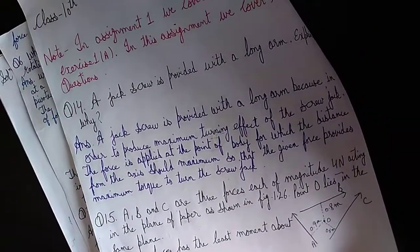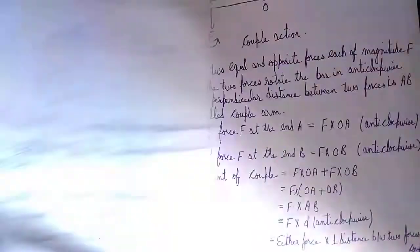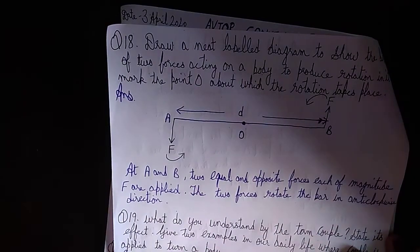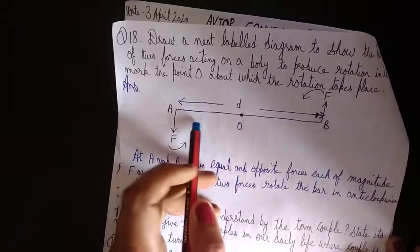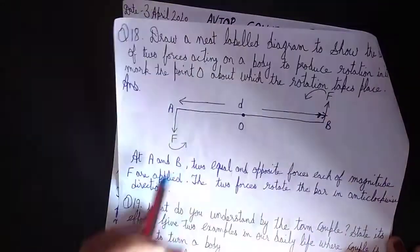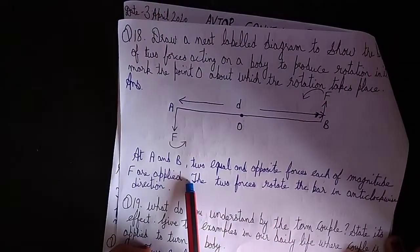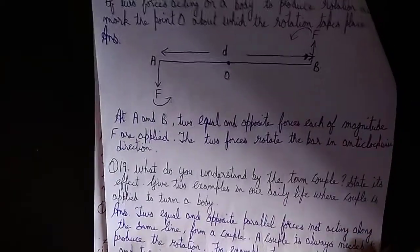Question number 18: draw a neat and clean diagram to show that two forces acting on a body produce rotation in it, marking the point O about which the rotation takes place. At points A and B, two equal and opposite forces each of magnitude F are applied, and the two forces rotate the body in the anticlockwise direction.